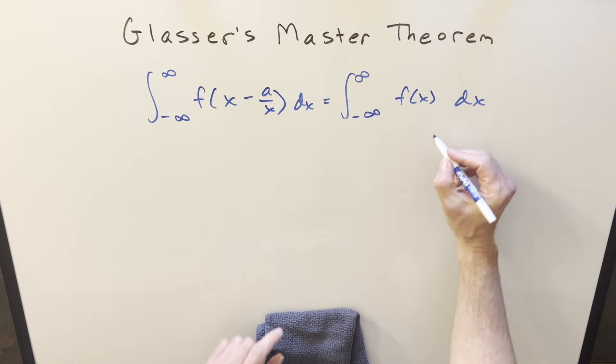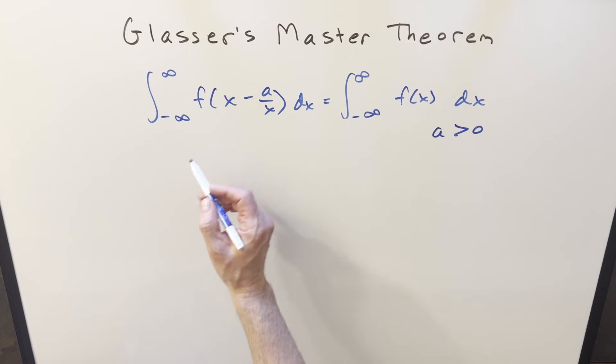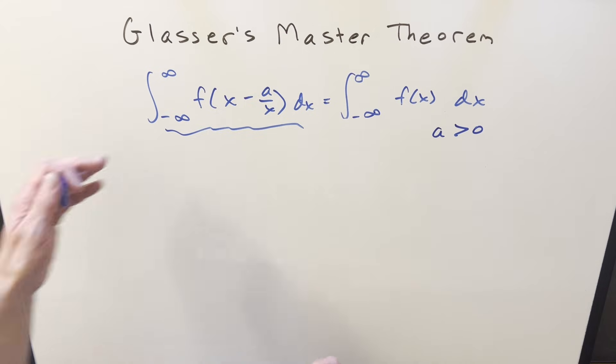I want to assume that this a value is going to be greater than 0. And we also want to have convergence on this integral here. Otherwise, there's also another way to express this with Cauchy's principal value, but I don't want to include that. So we're going to assume convergence.